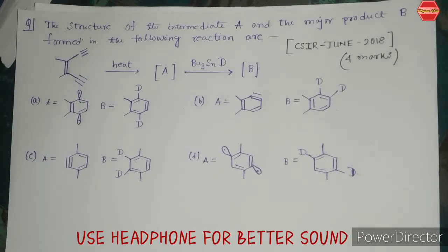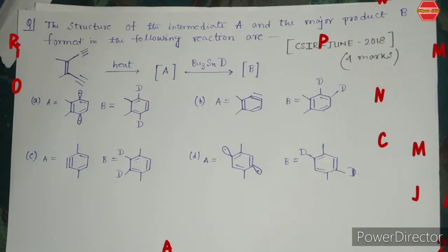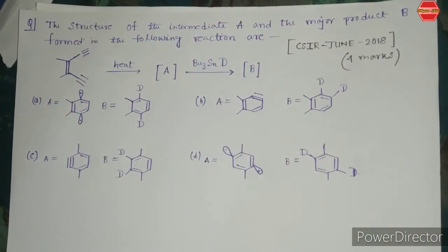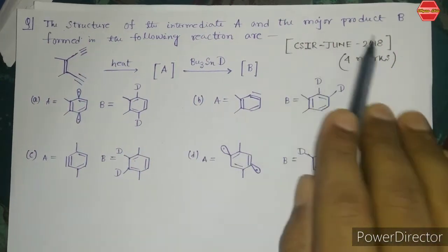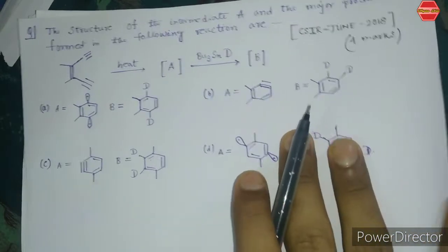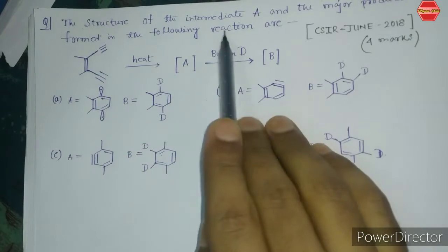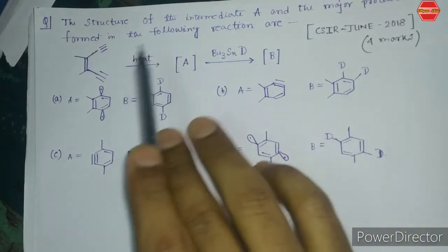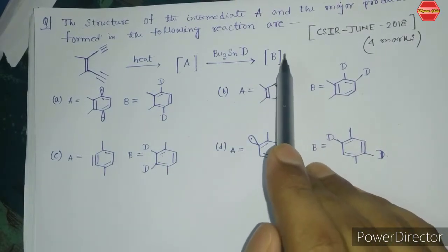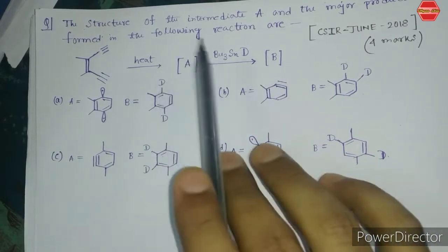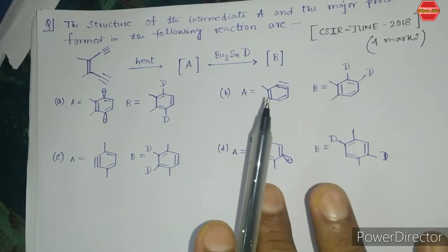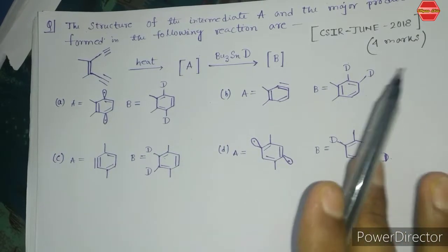Hello everyone, welcome to my channel. In this video we will try to understand an important name reaction — the Bergman cycloaromatization reaction. This was also asked in CSIR June 2018. The question asks for the structure of intermediate A and the major product B formed in the given reaction. To solve this question, we need to know what type of compound is used for this reaction.